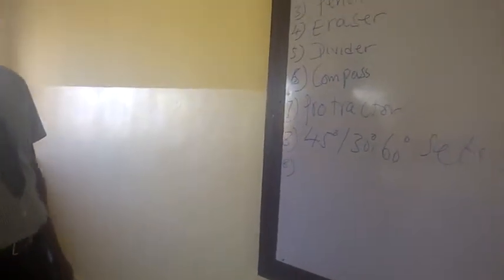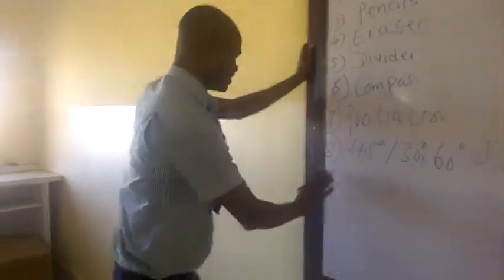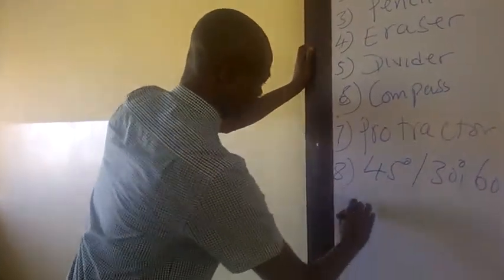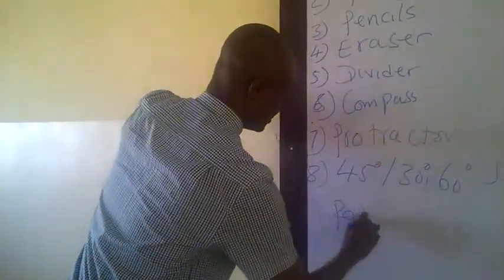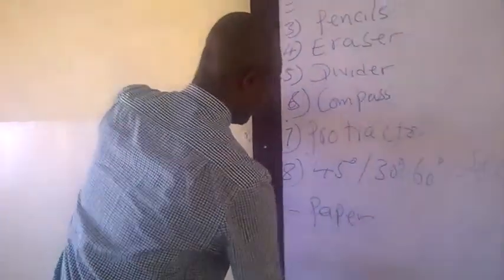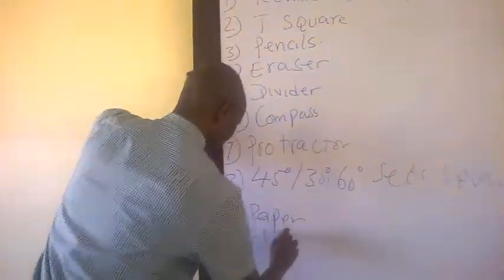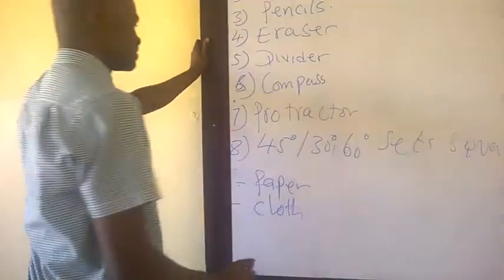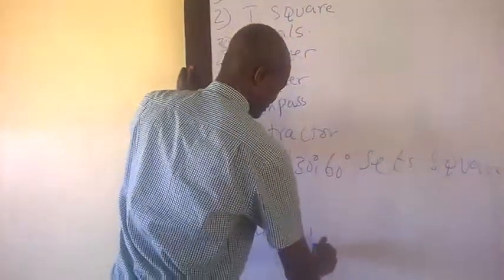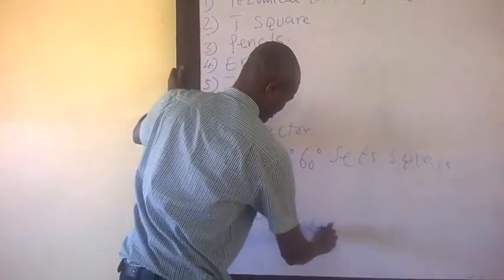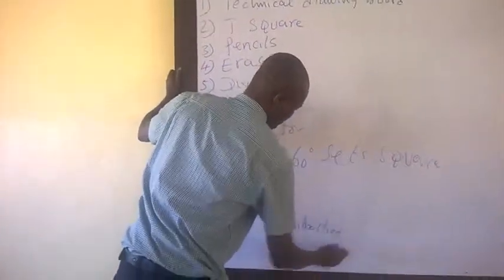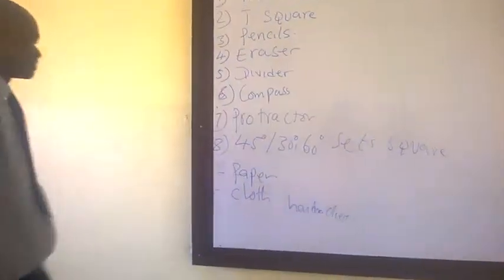Now, the eighth one here has to do with the materials. The materials here are the paper. One. Paper. Two, a cloth, a piece of cloth. This cloth can be a handkerchief.